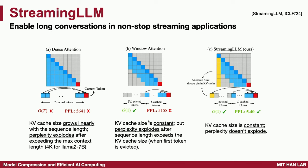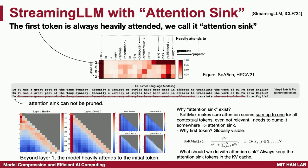What if we use a constant windowed attention, where each new token only attends to a window of past tokens? That solves the memory issue but not the perplexity issue — as soon as the first token gets evicted from the KV cache, perplexity suddenly explodes. We find a very simple yet effective solution: preserve those attention sink tokens. We should always pin the first tokens in the KV cache and never evict them, to maintain accuracy.